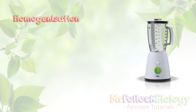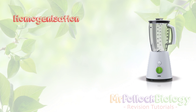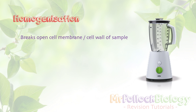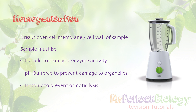Let's look at those stages in more detail, starting with homogenisation. Homogenisation is designed to release the organelles — we break open the cell membrane, or the cell wall if we're talking about plant cells. In order to protect the organelles, our sample must meet a couple of conditions. First, we've got to keep it ice cold to stop the enzymes that are designed to digest and recycle cellular components from being active. So it's ice cold to stop enzyme activity. It also has to be pH buffered, which will prevent further damage to organelles because organelles are really sensitive to changes in pH.